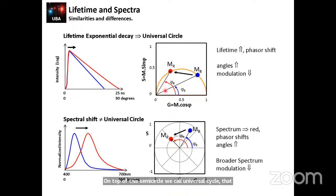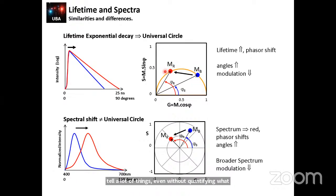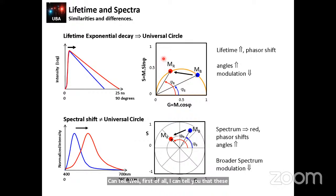This relies on the modulation and the phase. The interesting thing is that just by looking at the phasor, we can tell a lot of things, even without quantifying. What kinds of things can we tell? First of all, I can tell you that these two are single exponential decays, because they are on top of the universal circle.